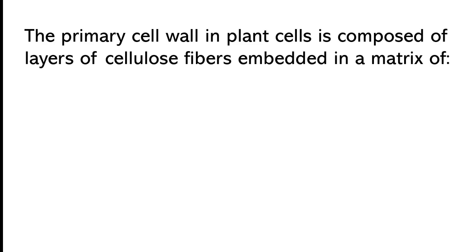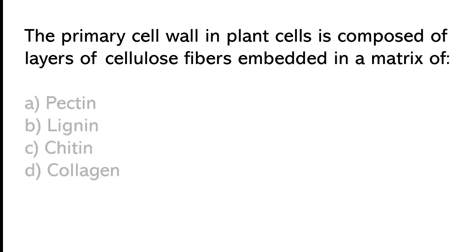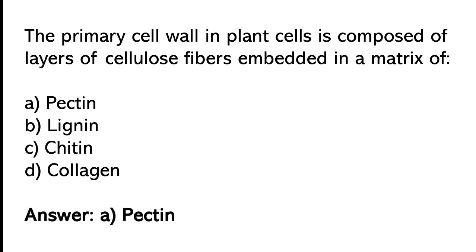The primary seal wall in plant seals is composed of layers of cellulose fibers embedded in a matrix of: fectin, lignin, chitin, or collagen. The correct answer is option A: Fectin.